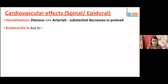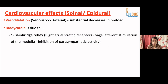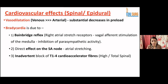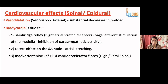Bradycardia is also seen, due to three effects. First is the Bainbridge reflex: right atrial stretch receptors are activated, sending afferent signals via the vagus to the medulla, causing inhibition of sympathetic activity. Second can be a direct effect on the sinoatrial node due to atrial stretching. Third is inadvertent block of T1 to T4 cardioaccelerator fibers. Any block above T4 level will block these nerves, causing significant bradycardia, hypotension, and total cardiovascular collapse. For very high-level blocks, it is better to use general anesthesia supplemented with epidural rather than purely spinal anesthesia.